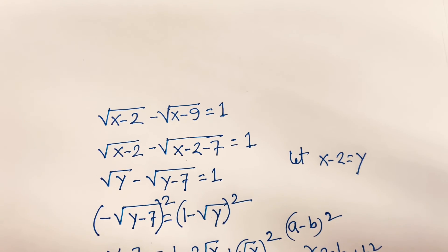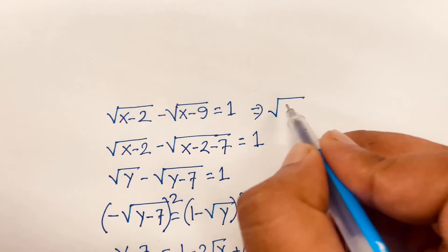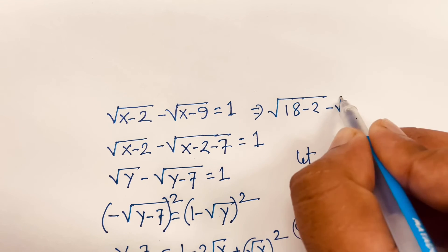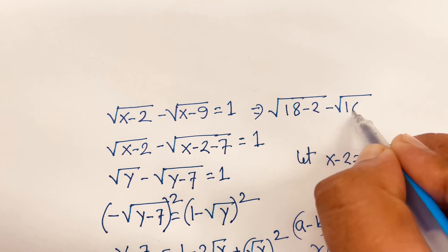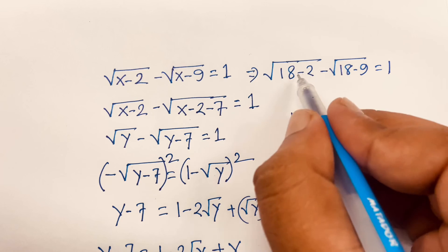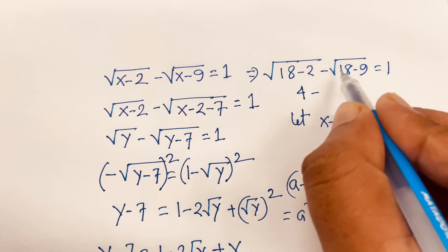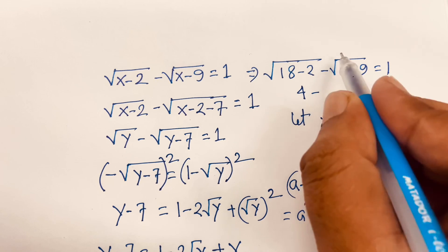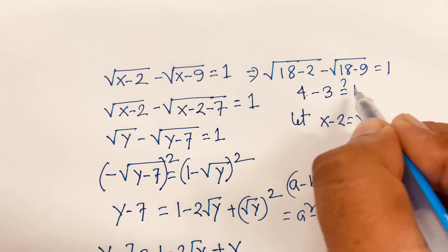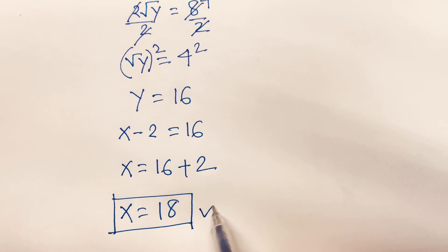Let's verify: substituting x equals 18, square root of (18 minus 2) minus square root of (18 minus 9) equals 1. Square root of 16 equals 4, minus square root of 9 equals 3, so 4 minus 3 equals 1. This confirms x equals 18 is the correct answer.